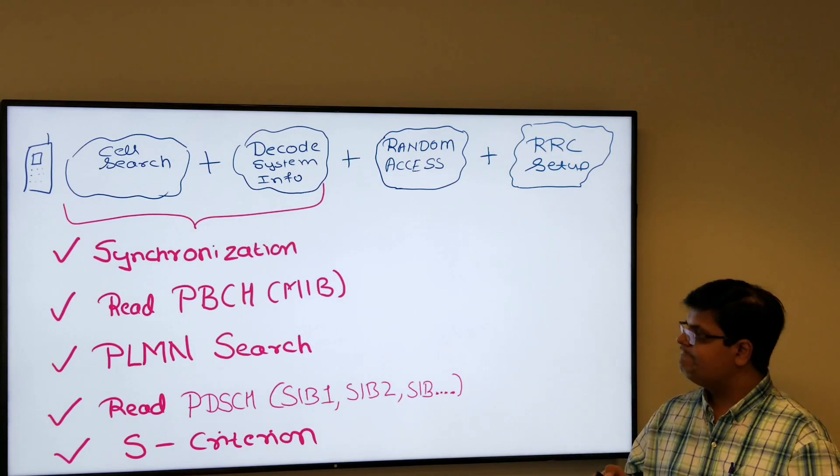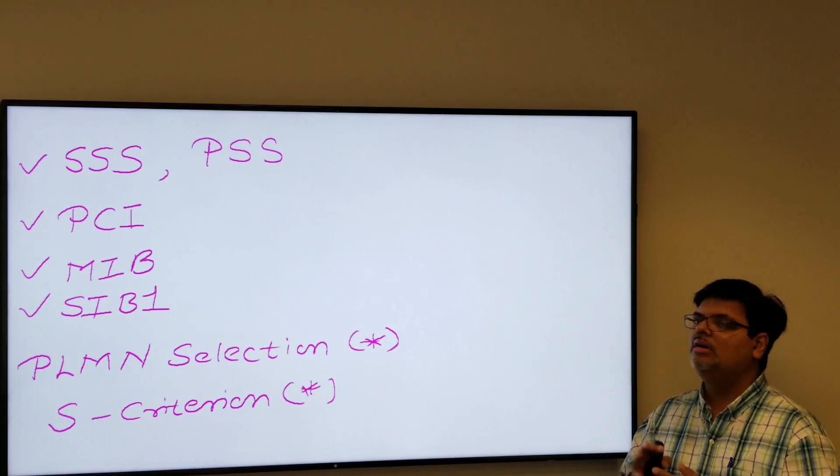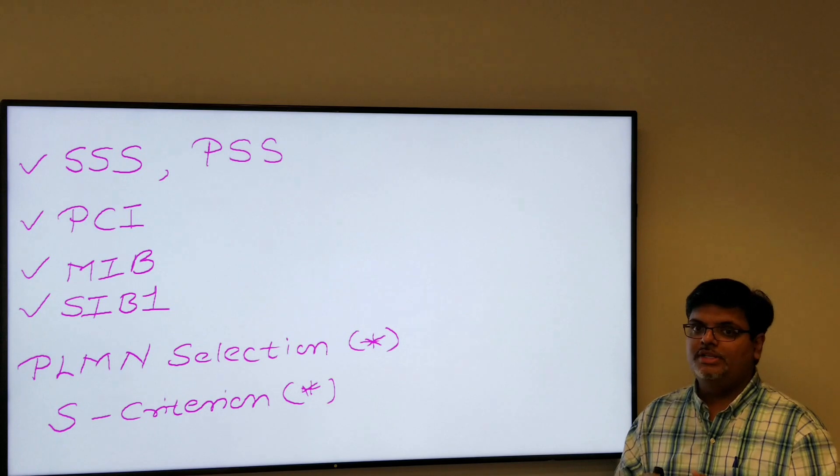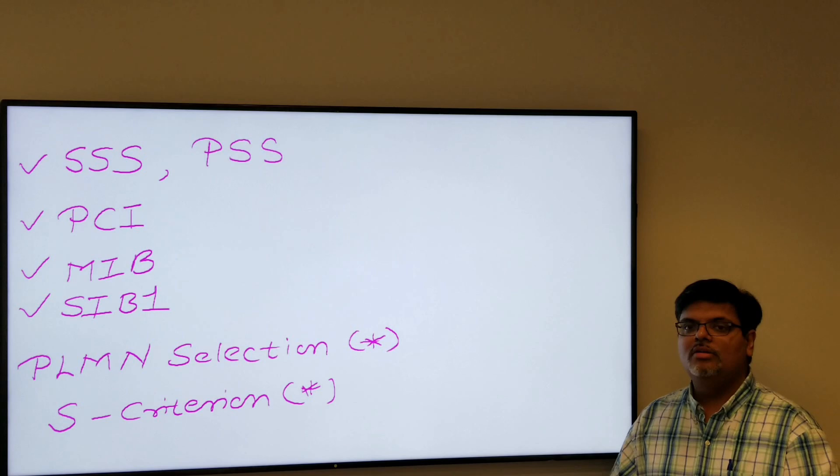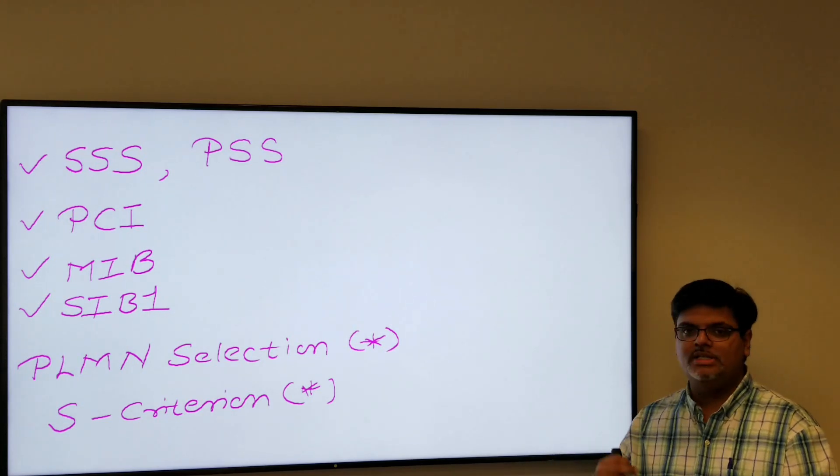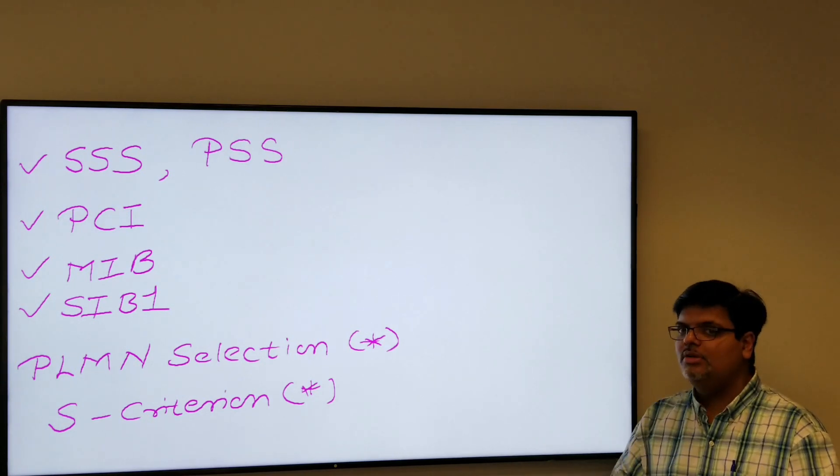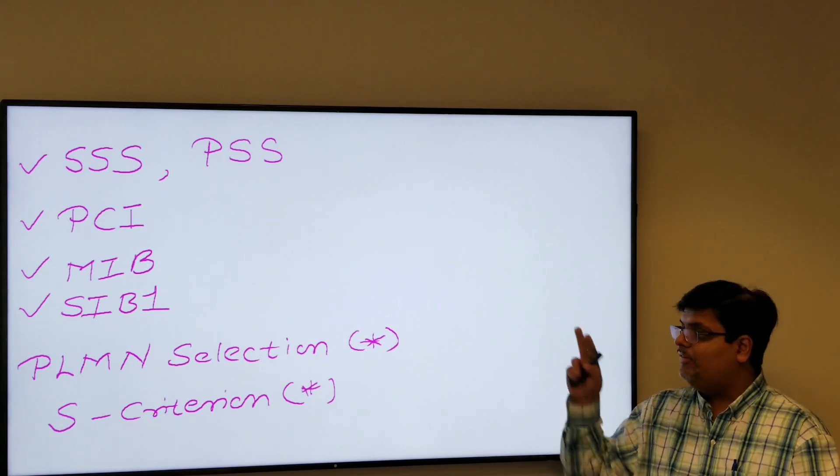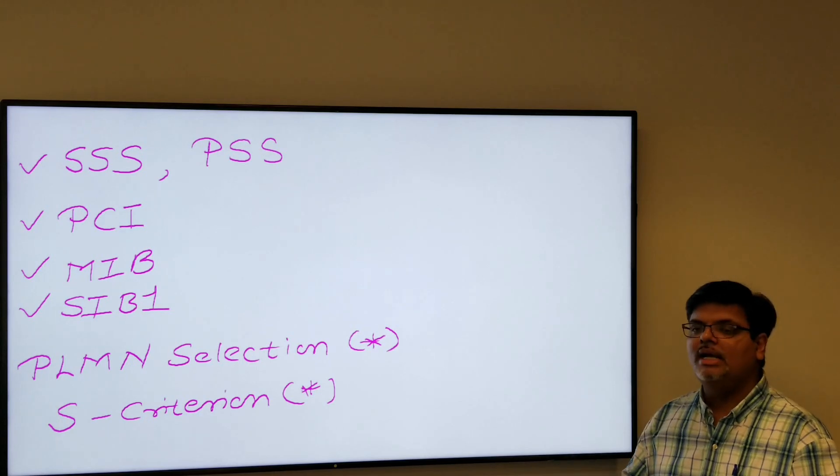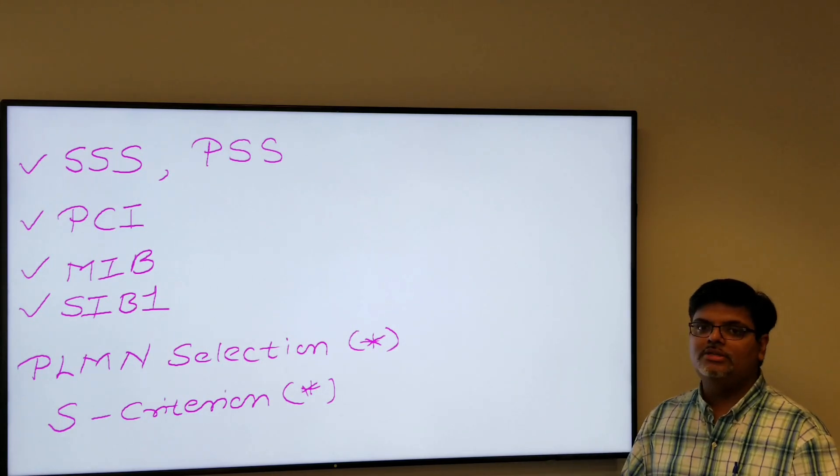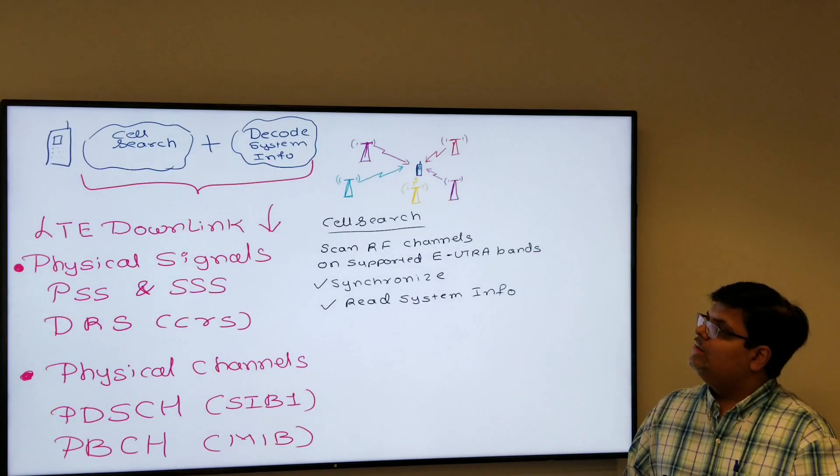What are the ingredients it needs to do all these processes? It needs SSS which is secondary synchronization signal, PSS which is primary synchronization signal. From both of it, it derives and computes PCI which is your physical cell ID. And then after that, it reads the MIB and SIB from the two different channels. After reading the SIB1, it actually calculates or does the PLMN selection or PLMN matching and calculates the S criterion whether the cell is suitable and strong enough to camp on.